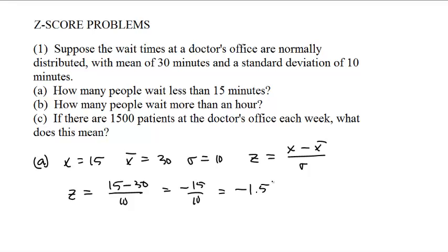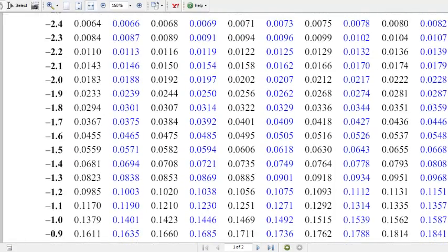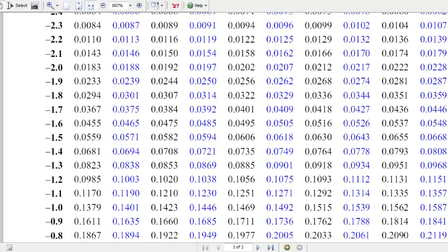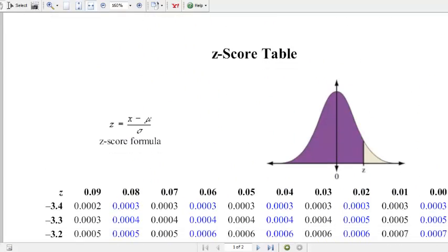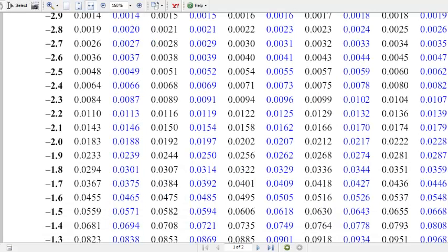So we go to the table and we look up negative 1.5. And negative 1.5, where's the 0? The 0 is on the far right column. So negative 1.5 is way at the end. 0.0668.